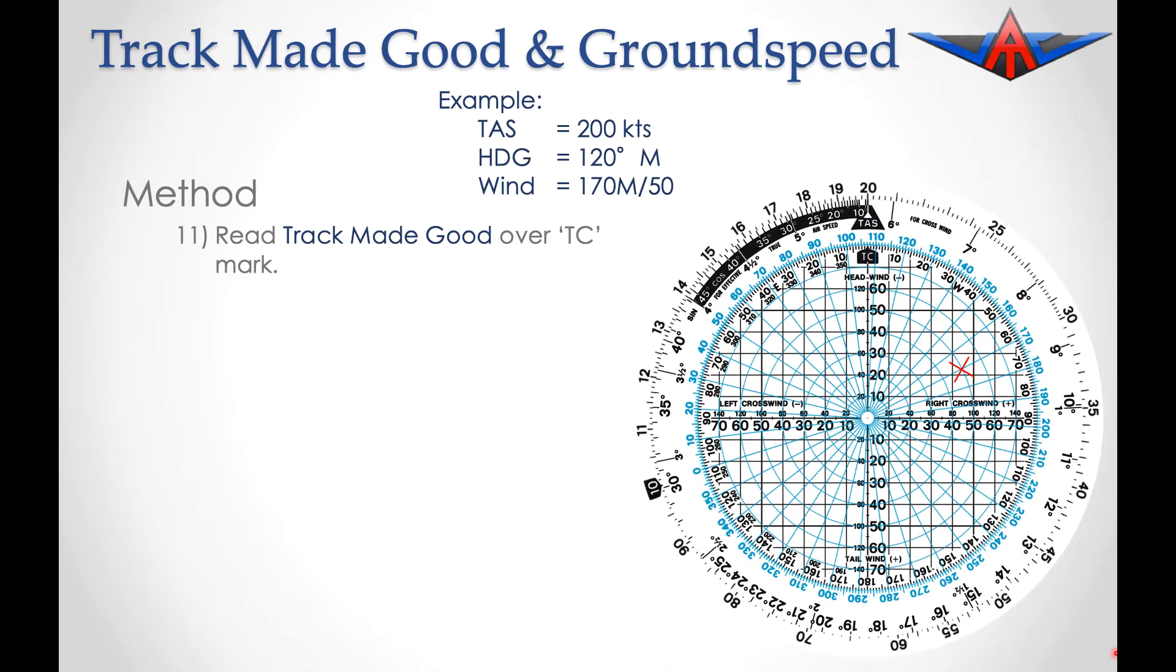We can now read off our track made good above the TC mark, which is 107 degrees magnetic. That's our actual track across the ground.